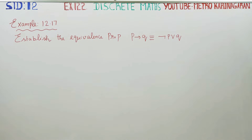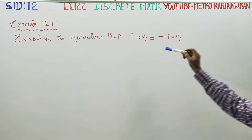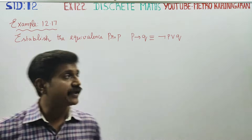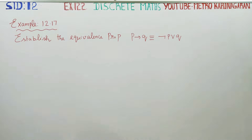Dear 12th standard students, in exercise number 12.2, example 12.17, we will establish the equivalence property: if P then Q is equivalent to negation P or Q.